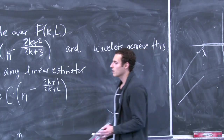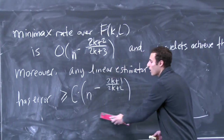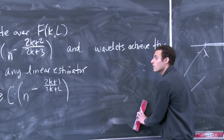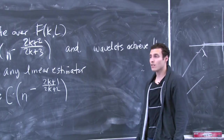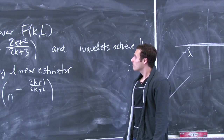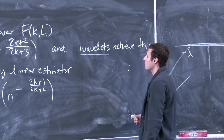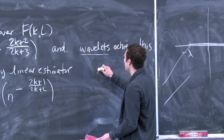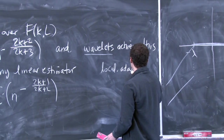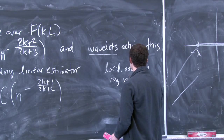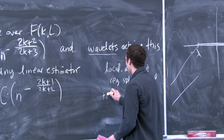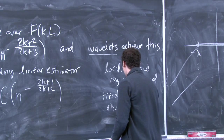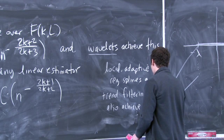It's remarkable because this result didn't pick out specific linear estimators like smoothing splines or kernels and study them individually — it just applies to the whole class. It's very rare that results like this can be shown that are so broad but still so definitive. This really dampened people's enthusiasm for using linear estimators for nonparametric regression where the underlying function's level of smoothness is unknown. Two other methods that also achieve the optimal rate over F(k, L) are locally adaptive regression splines and trend filtering — also optimal, and a big source of motivation for these methods.